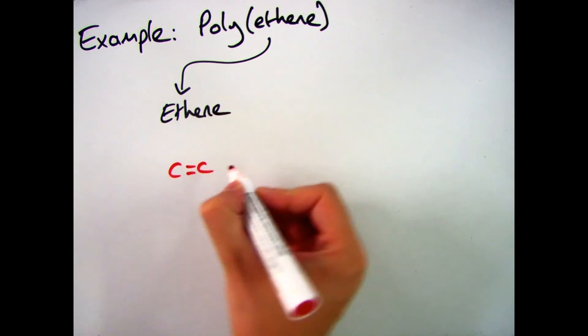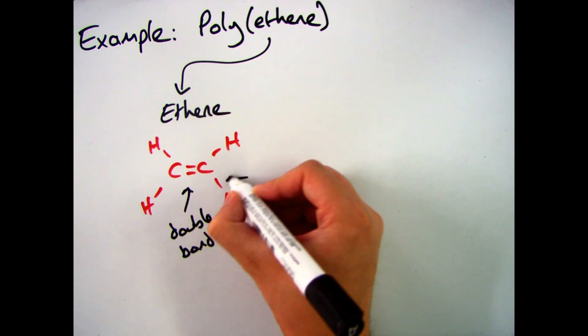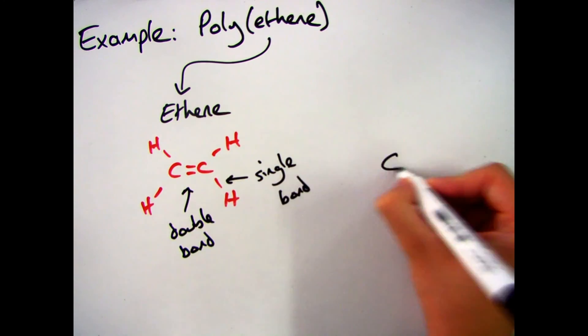starting off with an ethene molecule which looks a bit like this. It's got one double bond and four single bonds in it.